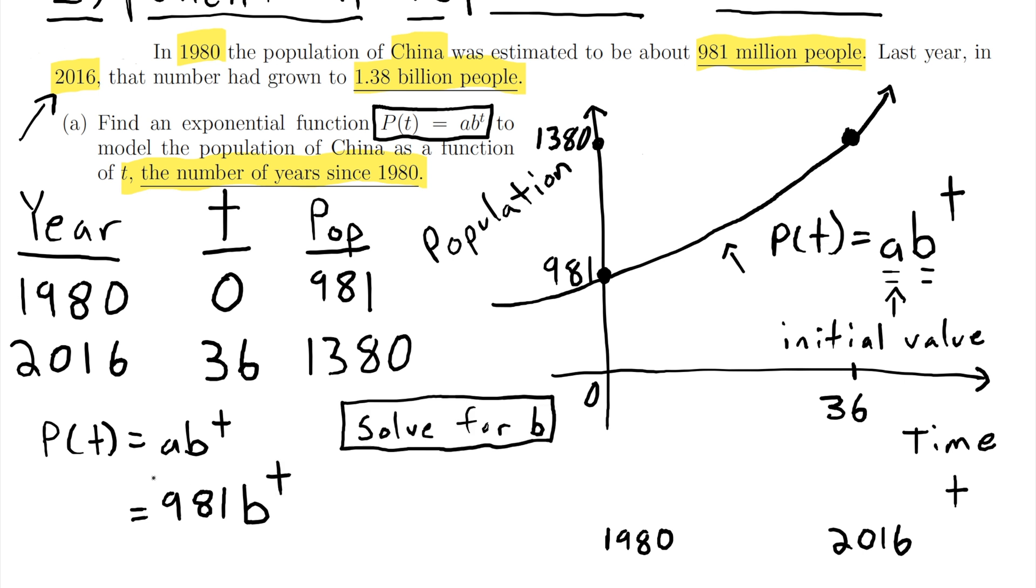Now we just need to solve for b here. And you could do this in your calculator but I'm going to do it algebraically. I'm going to set up an equation. I've already used one data point that was given to me which is the initial value. Now we're going to use the second piece of data that we have.